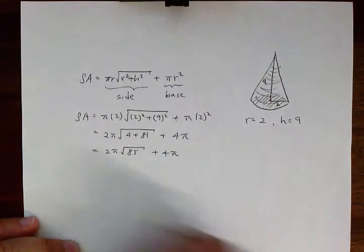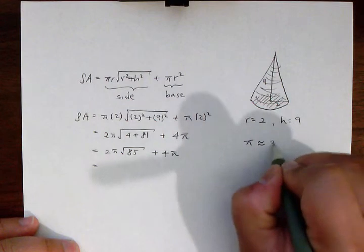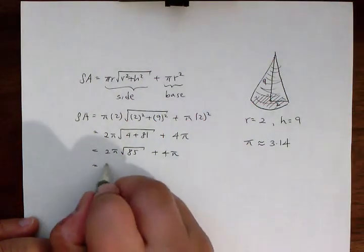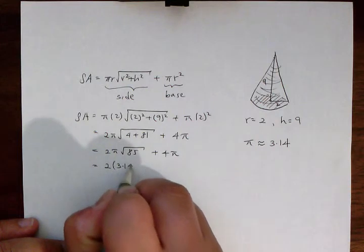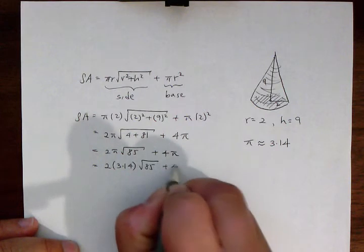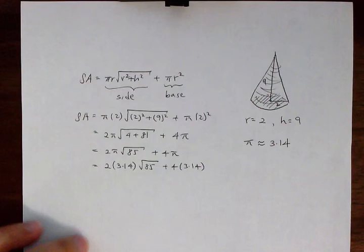In this problem we're also going to roughly approximate pi to be 3.14. So in that case we're going to substitute 3.14 instead of pi.